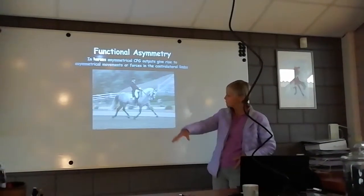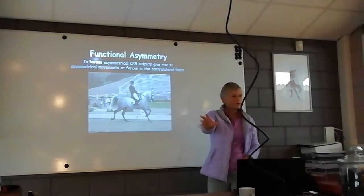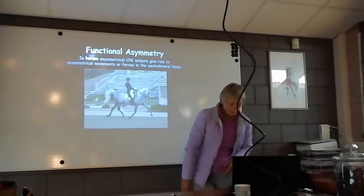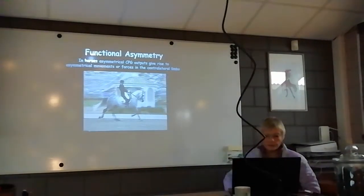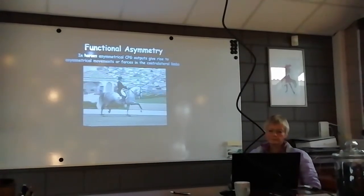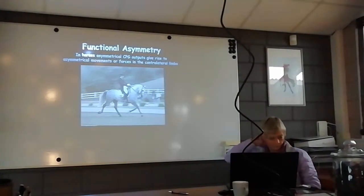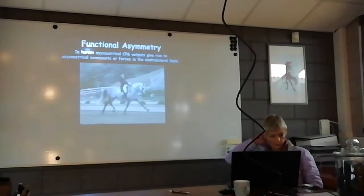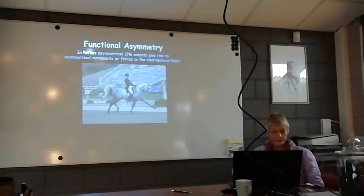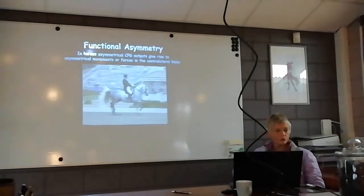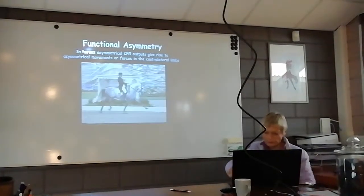You'll see a slightly different amount of protraction, a different amount of toe-flipping in the two forelimbs. And that sort of thing I just regard as part of the natural asymmetry, particularly when it's in the swing phase.